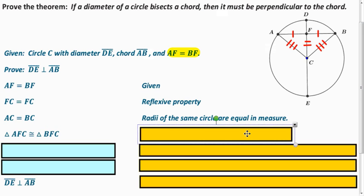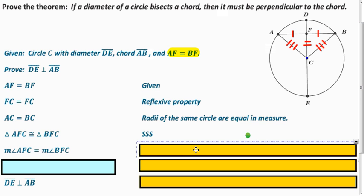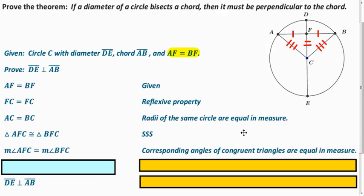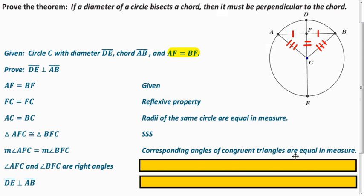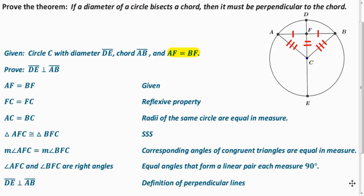And does that get us congruent triangles? Yeah, AFC is congruent to BFC because of side-side-side. So now we can say that angle AFC has the same measure as angle BFC, because they're corresponding parts of congruent triangles. And like we said before, we know that they're both right angles because their angle measurements add up to 180, and they're the same, so we divide it by 2 and get 90. So that means that we have the diameter perpendicular to the chord like we wanted to show.